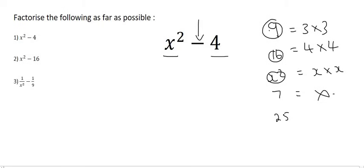So, is x squared a perfect square? Yes, because x times x can give x squared. And is 4 a perfect square? Yes, because 2 times 2 can give us 4.